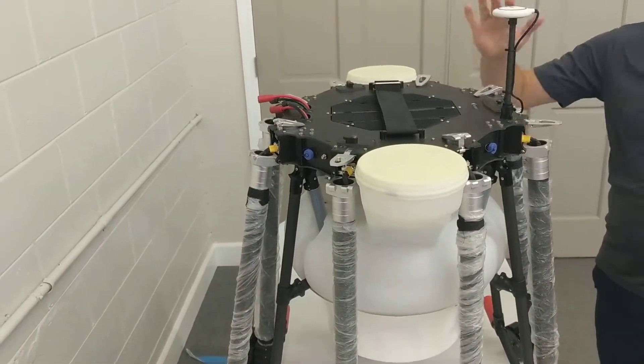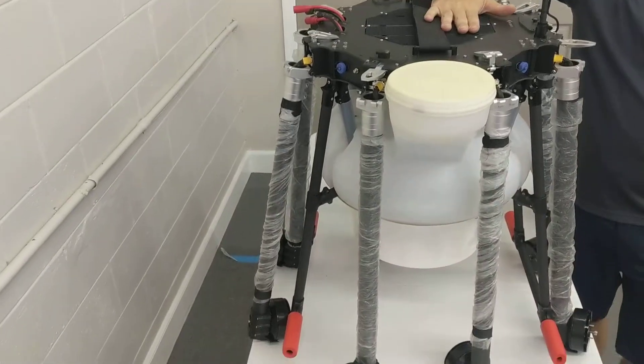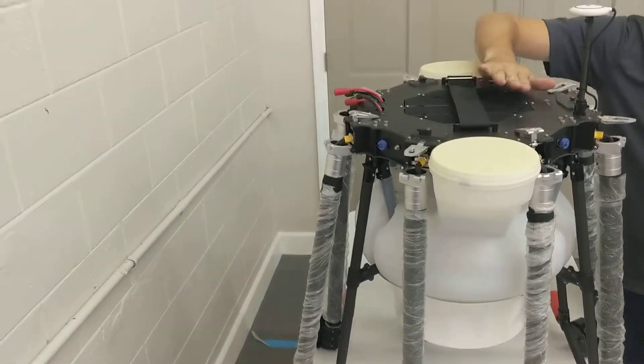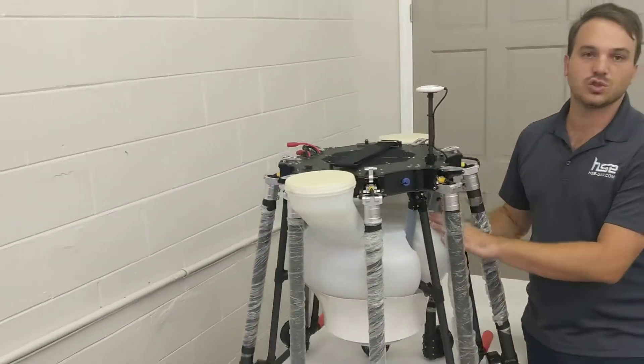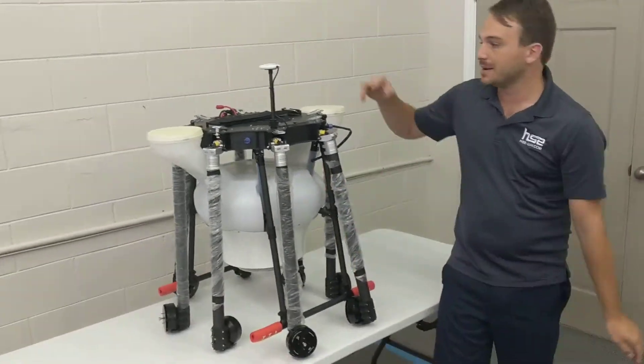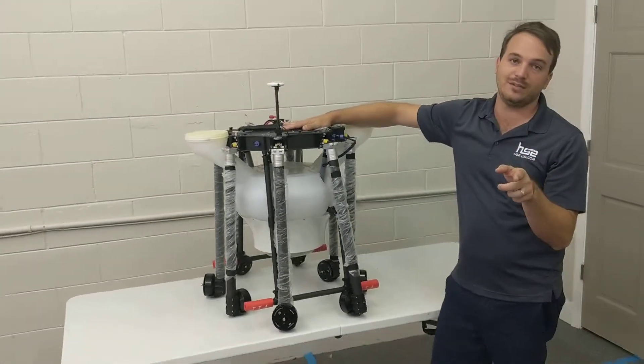And again, this particular model is set up as a combination sprayer spreader model. So this tank can be removed and swapped out with a liquid sprayer. Check it out, hscuav.com.